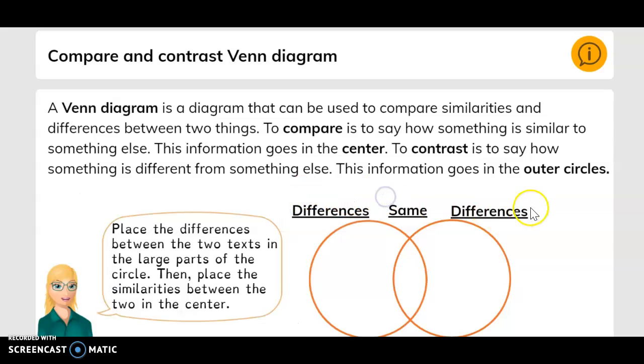Place the differences between the two texts in the large parts of the circle. Then place the similarities between the two in the center.